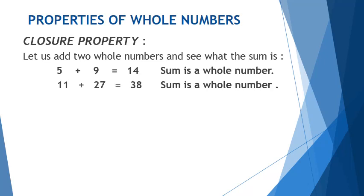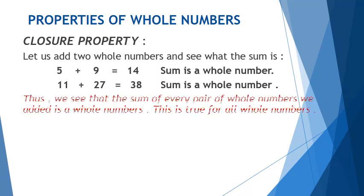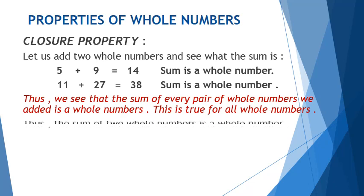One more example: 11 plus 27. Here, 11 and 27 are both whole numbers, and their sum is 38, which is also a whole number. So, the sum of every pair of whole numbers is a whole number. This is true for all whole numbers.